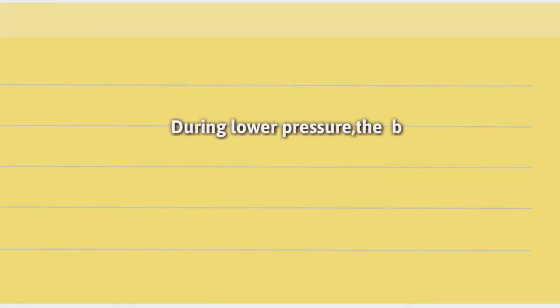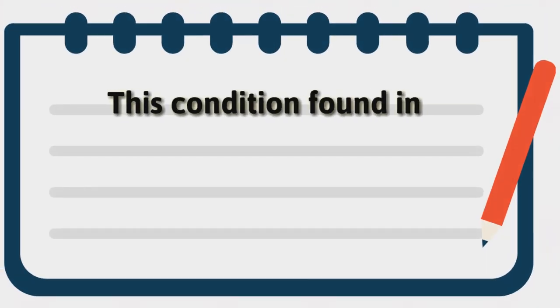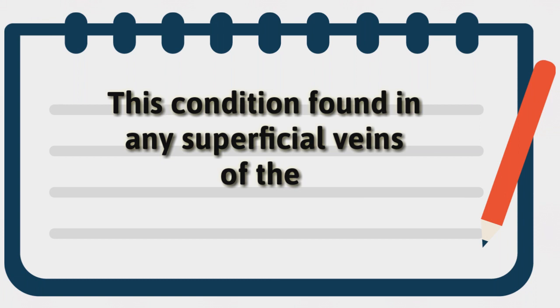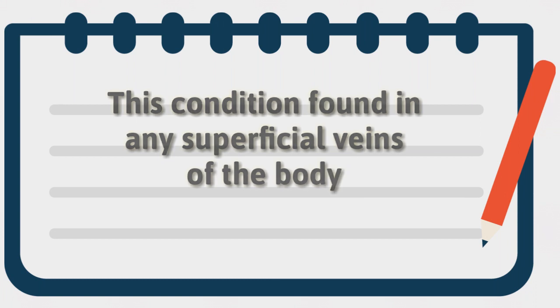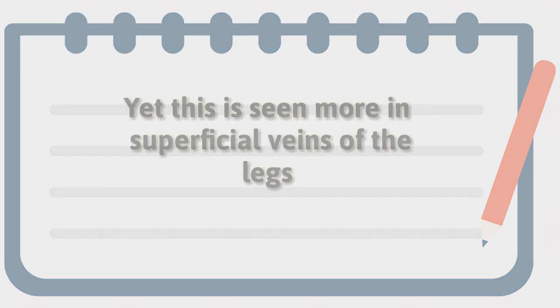If the pressure decreases, blood becomes congested and may lead to edema. These congested and visible veins are often found in the legs and thighs. Although this condition can occur in any region of the body, the legs are most often affected.